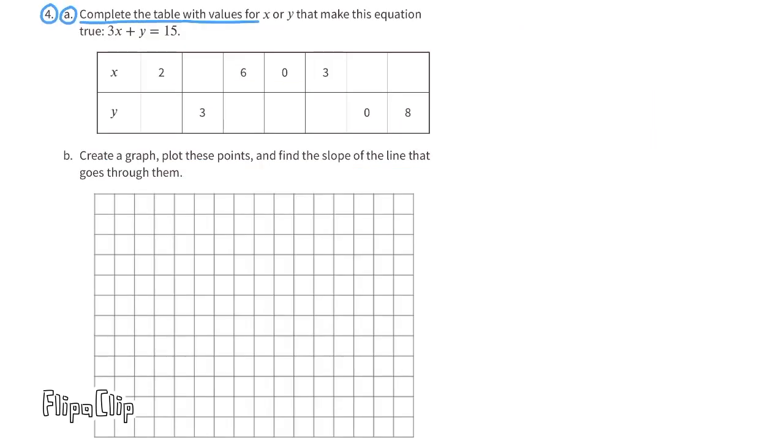Number 4. A. Complete the table with the values for x or y that make this equation true: 3x plus y equals 15. In this table, the x values run horizontally across the top. The equation says 3x. That means that we have to have three values for x. The value for x here is 2, so we need 2 plus 2 plus 2, which is 6. 6 plus what number equals 15? 6 plus 9 equals 15, so the value for y is 9 when the value for x is 2. The next column gives us the value for y. 15 minus 3 equals 12, and 12 divided by 3 equals 4. When the value for y is 3, the value for x is 4.